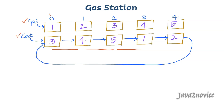Let's say we are starting from index 0. Initially our tank is empty. We need 3 units of gas to travel from here to here but we have only 1 unit available. Due to shortage of gas we cannot travel from index 0 to index 1. Now let's say we are starting from index 1. We need 4 units to travel but we have only 2 units available, so again we cannot travel from index 1 to 2.